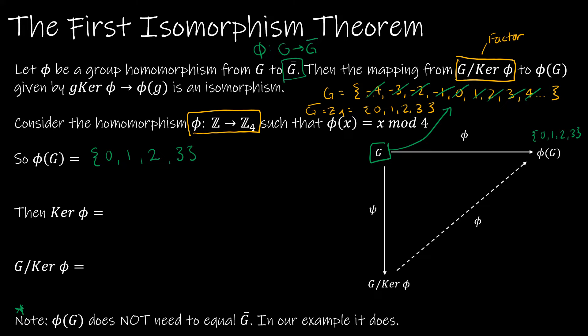We want to find G mod the kernel of phi. First we find the kernel of phi — the elements of G that map to the identity of phi(G), which is 0. So what elements of G map to 0? Those are -4, 0, 4, 8, and so on — the multiples of 4, which we write as the cyclic subgroup generated by 4, ⟨4⟩. Now we find the factor groups G mod ⟨4⟩.